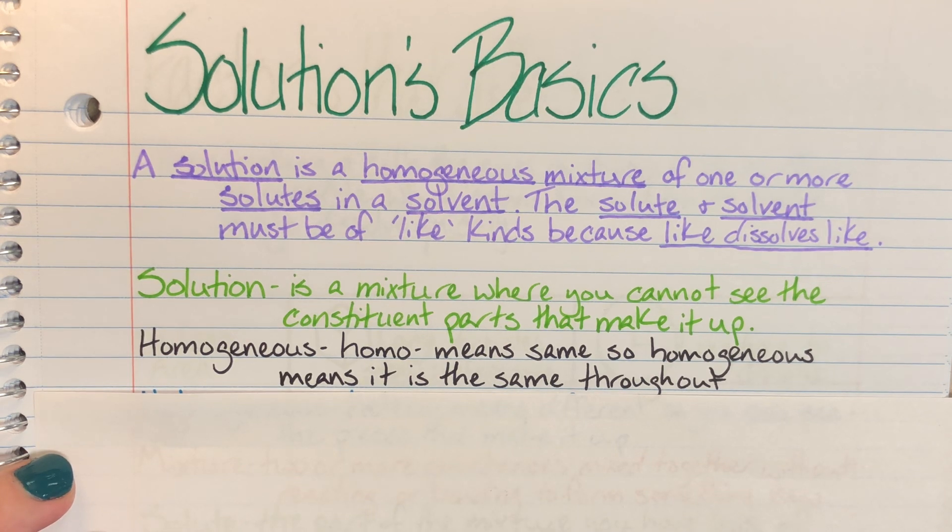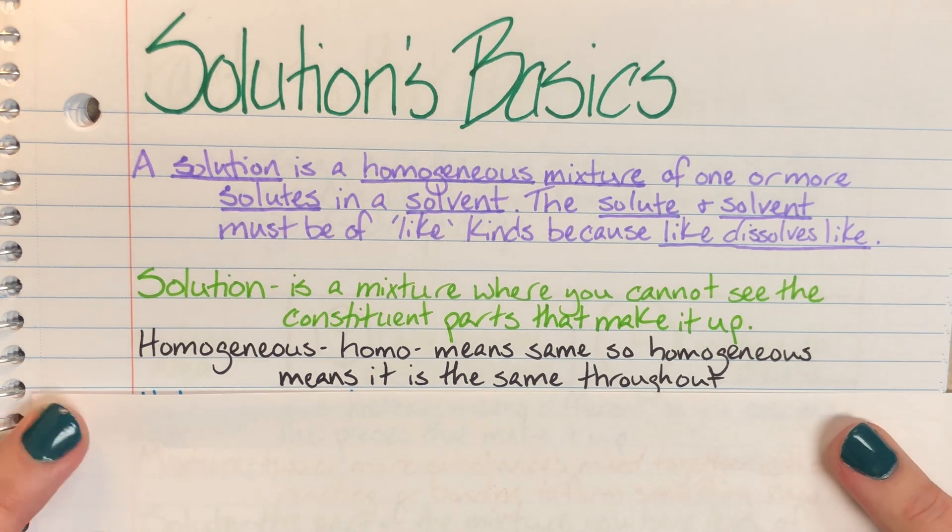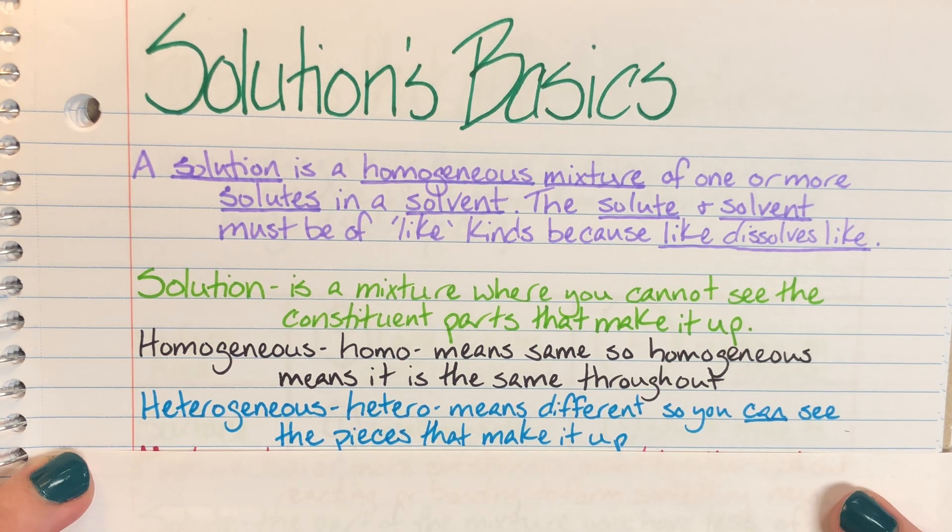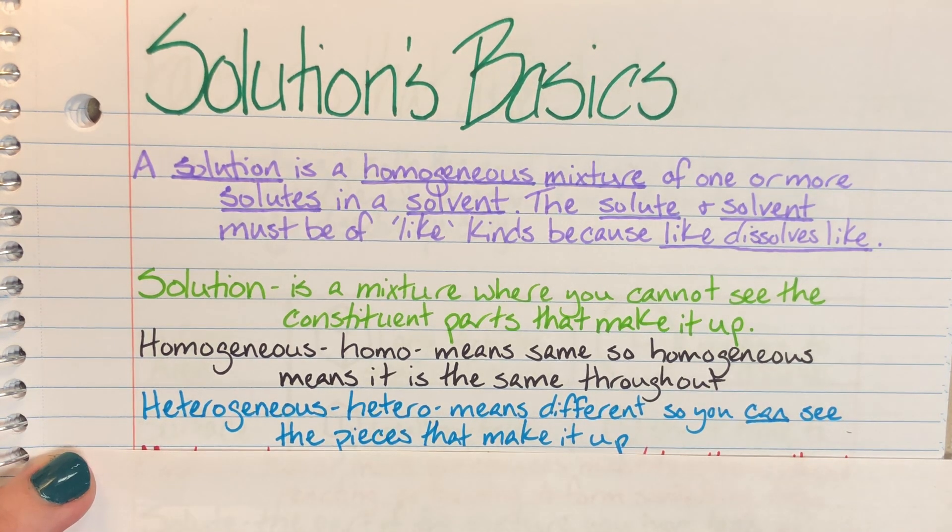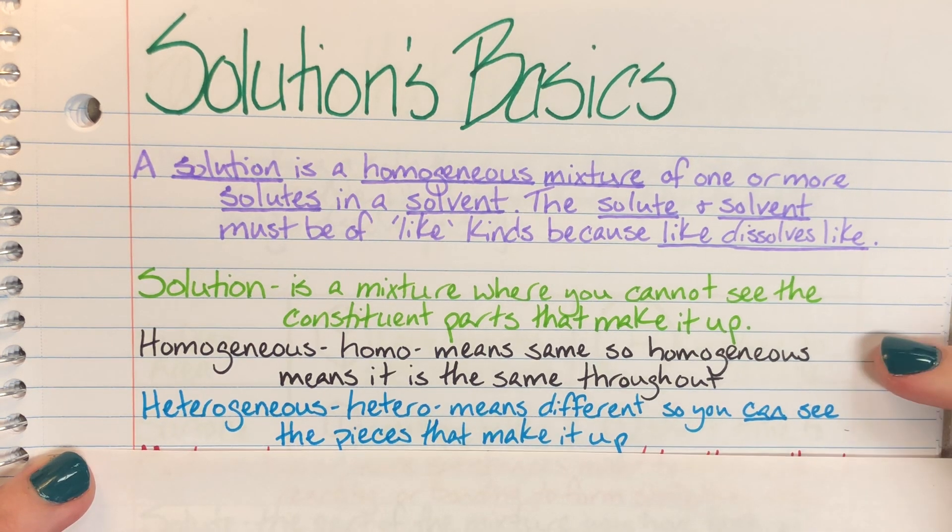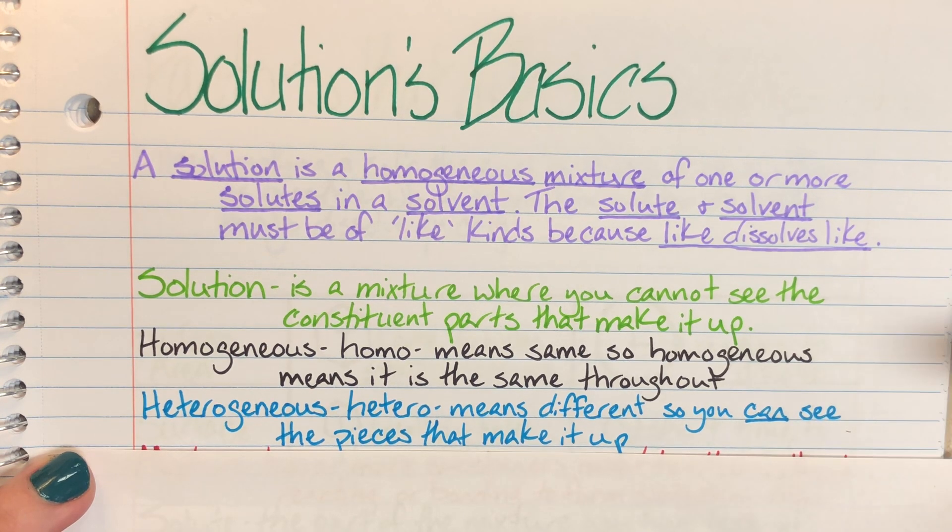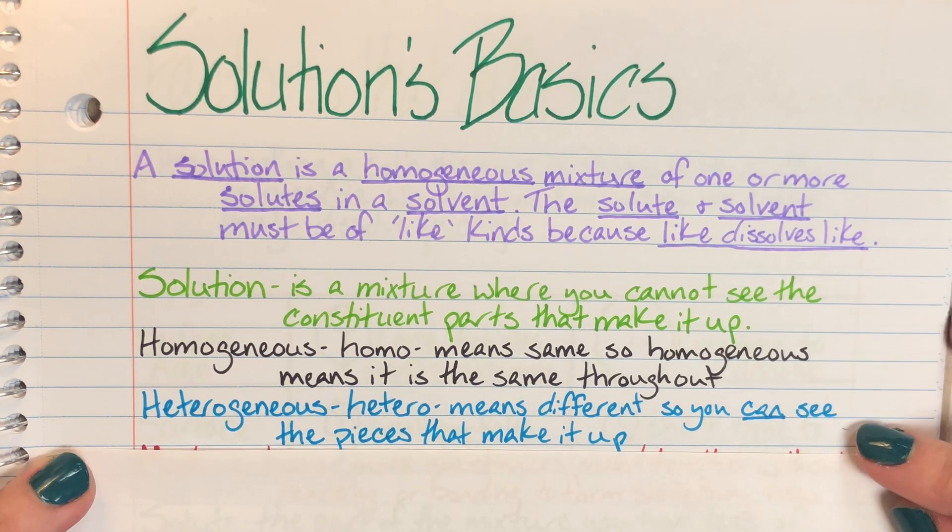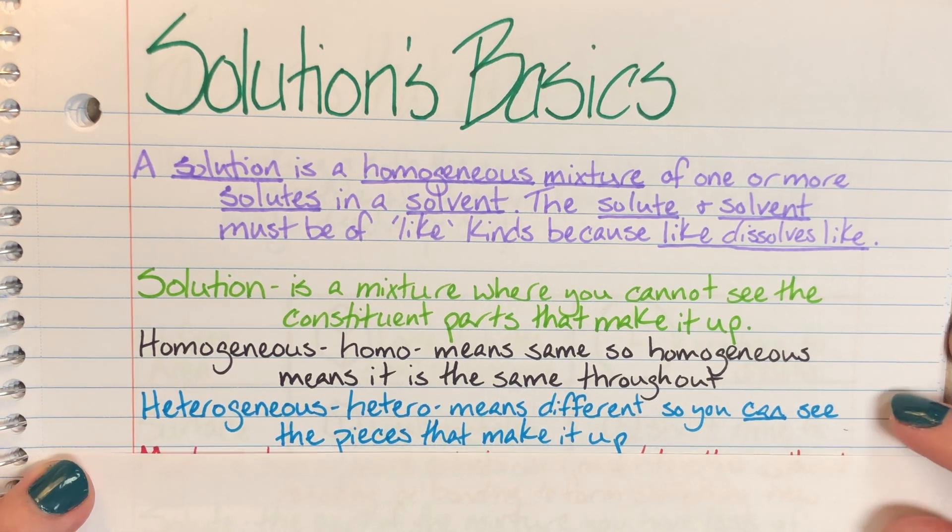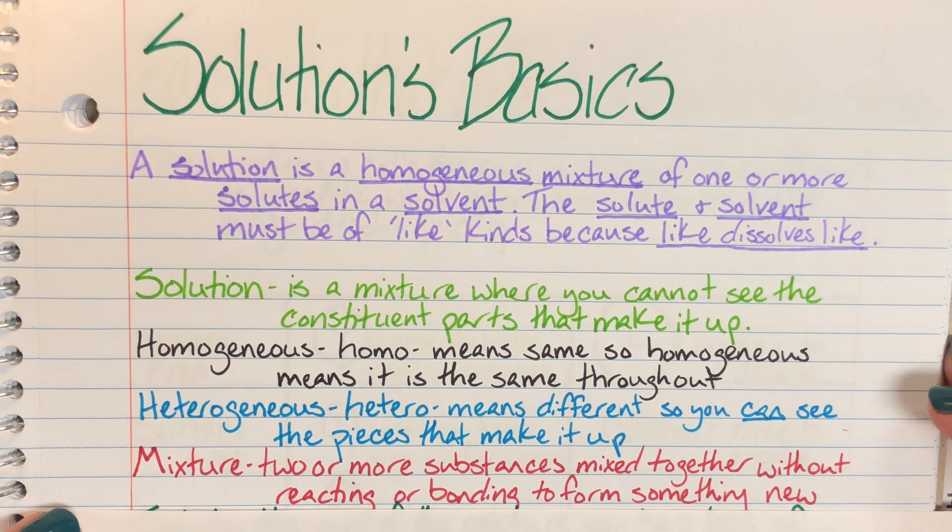So a solution is a homogeneous mixture, as opposed to a heterogeneous mixture. Hetero means different, and so you can see the pieces that make it up. So a solution must be homogeneous, meaning I cannot tell the difference between the individual pieces that make it up. If I can tell the difference, then I am a heterogeneous mixture, and that means I am not a solution.